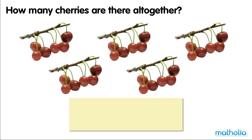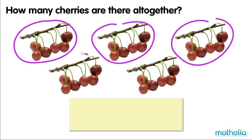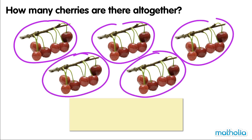How many cherries are there all together? One, two, three, four, five. There are five groups of cherries.